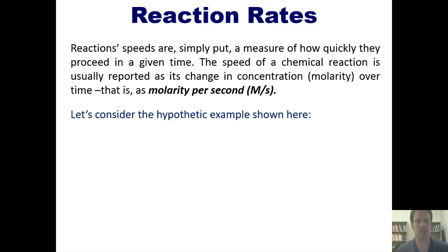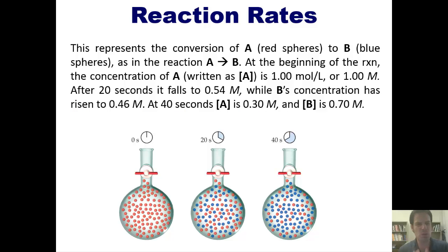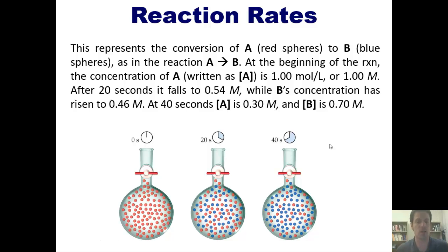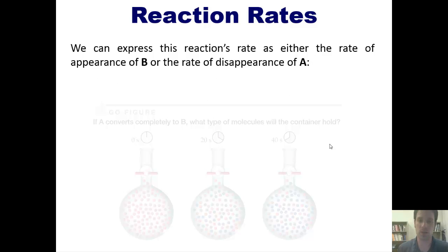Let's take this hypothetical example. This represents the conversion of A, which are reactants or red spheres, to B, which are products or blue spheres, in the reaction A converting to B. At the beginning, the concentration of A is one molar. After 20 seconds, it falls to 0.54 molar, while B's concentration has risen to 0.46 molar. By 40 seconds, the concentration of A is 0.3 molar and B is 0.7 molar. We can express the reaction's rate either as a rate of appearance of B or as a rate of disappearance of A.